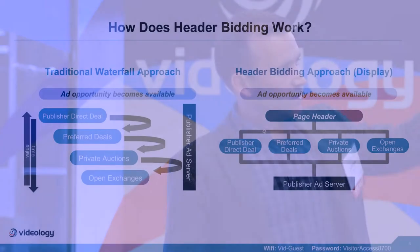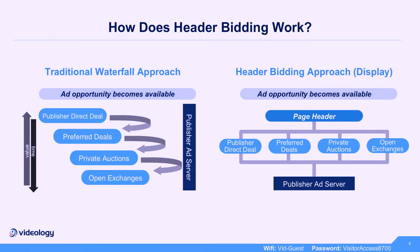On your left is a version of a traditional waterfall. You might have your publisher direct deals at the top, didn't clear there might go down to preferred deals, then go to private auctions, and then the open exchange. As you work down that waterfall, time increases but value also decreases, as value tends to be higher at the top.